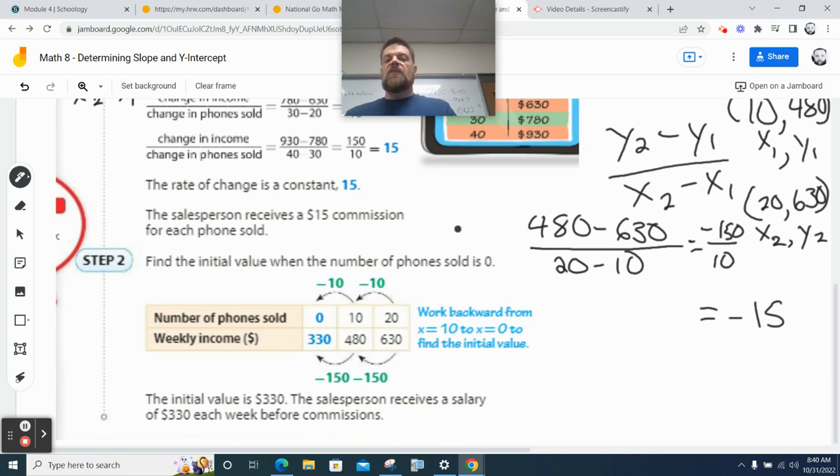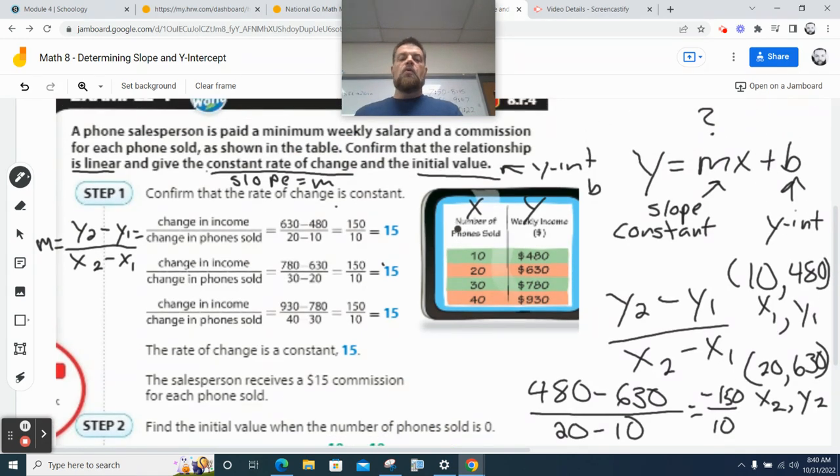So anyways, when we do that for all these points, we get a constant rate of 15. So the constant rate of change is 15. What does that mean? Yeah. That m, my slope, is 15. And then it says the salesperson receives a $15 commission for each phone sold. Oh, that's good.